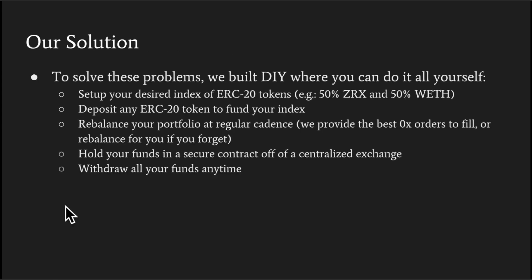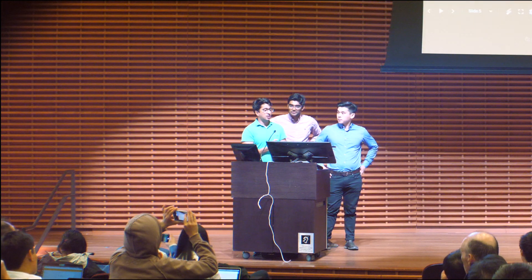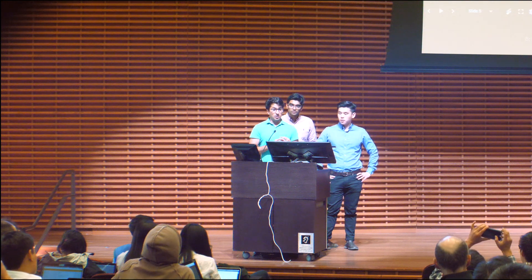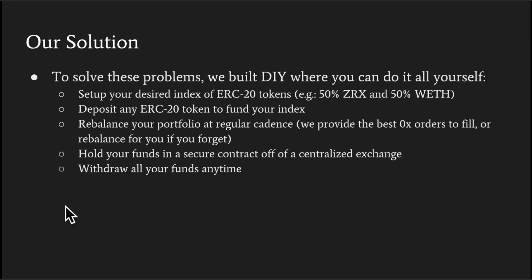So we solved the problem by building a smart contract which builds your own index. In the setup process, you can customize it to your liking — you can set up the weights that you want, the rebalance frequency, you can deposit any amount of ERC-20 tokens that you want, and you can withdraw them any time. And it's not on a centralized exchange, so you're not paying anyone else any fee.